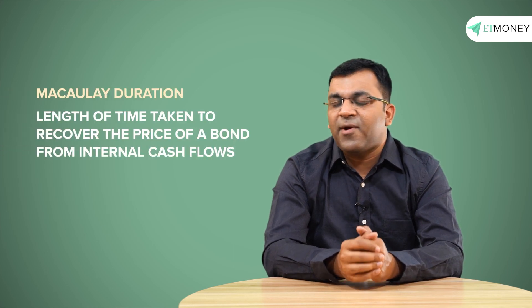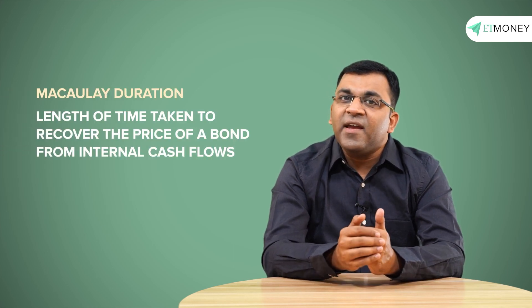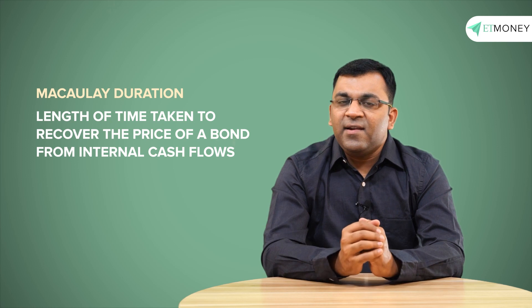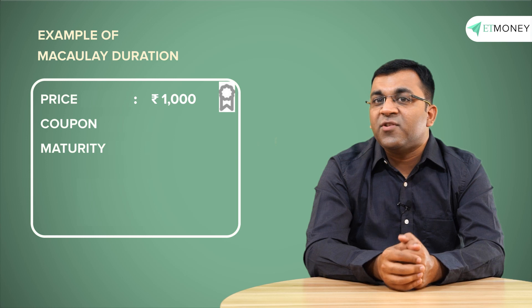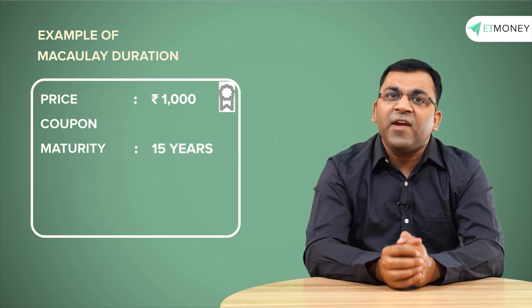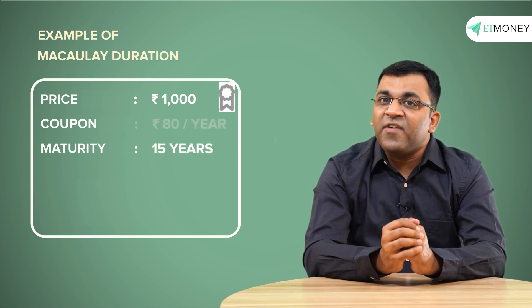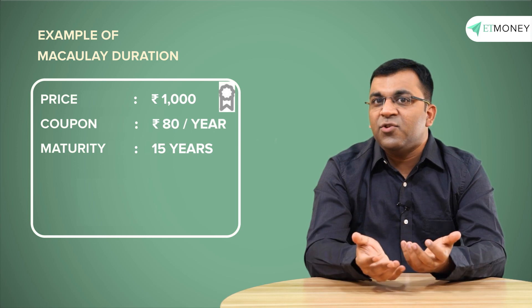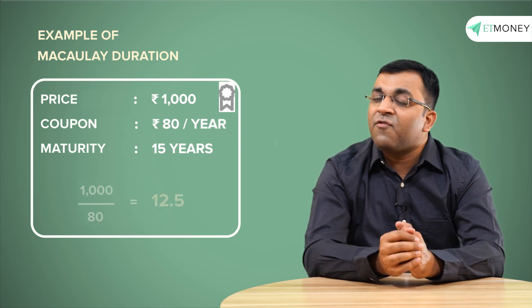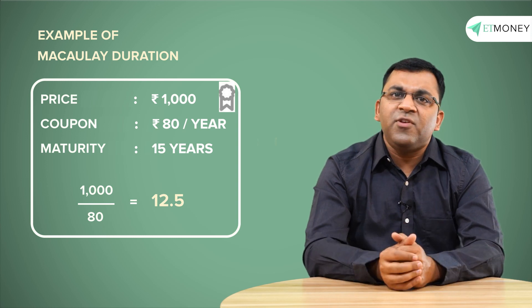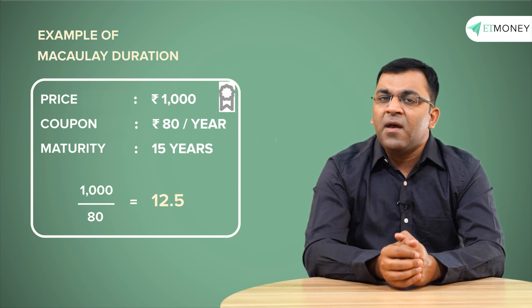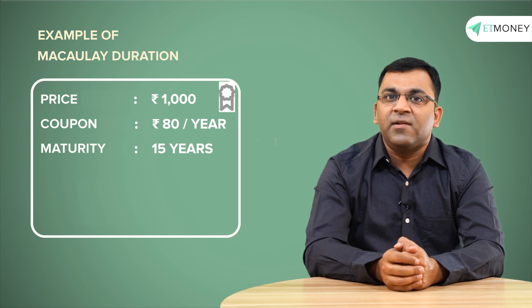The Macaulay duration is a measure of how long it will take for the price of the bond to be repaid from the internal cash flows of the bond. For a crude example: a 1,000 rupee bond maturing in 15 years paying a coupon of 8% — that's 80 rupees every year — means you would have recovered your invested amount in 12.5 years, which is much before the 15-year maturity.